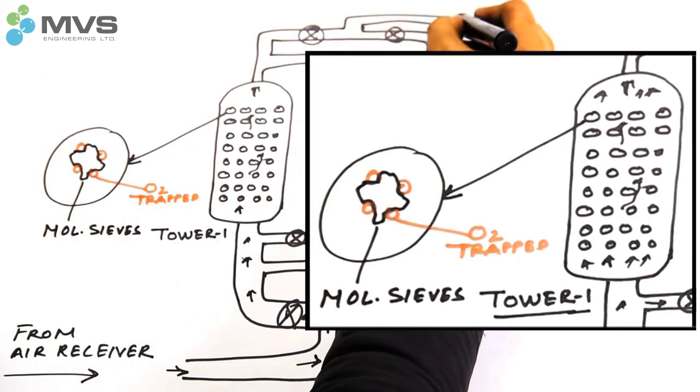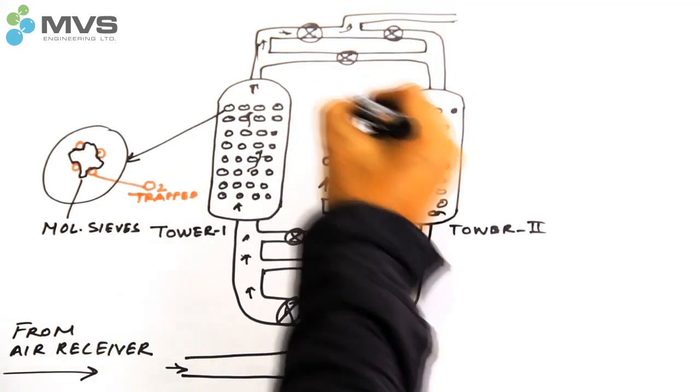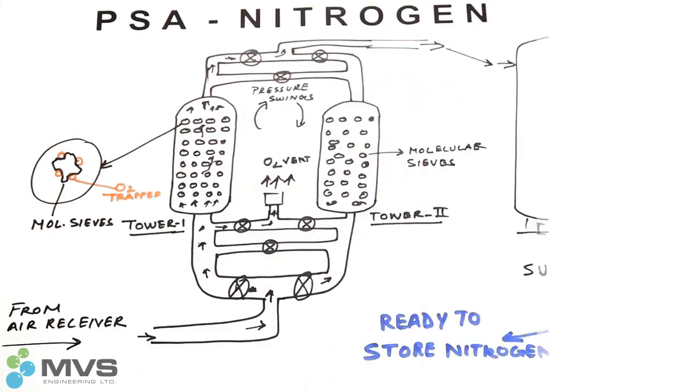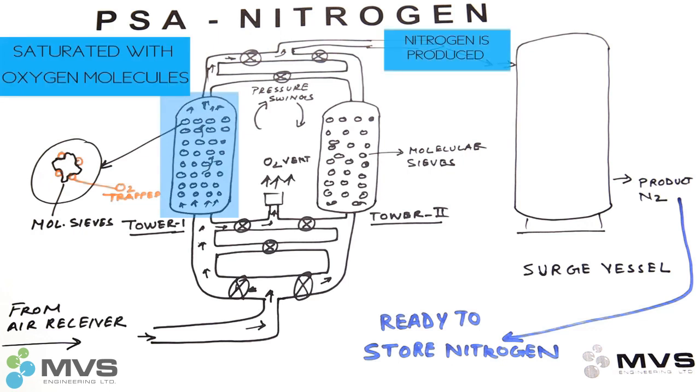The nitrogen molecule being bigger is unable to be trapped and hence gets delivered as a product nitrogen gas from this tower. The nitrogen production continues till tower 1 gets saturated with oxygen molecules.